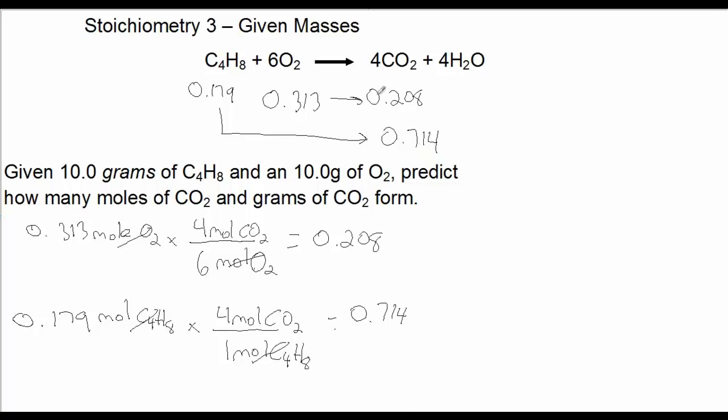So, in this case, the more realistic number is going to be the 0.208 moles of CO2. Even though, check it out, even though there's more moles of O2 rather than C4H8, again, it's that 6 to 1 ratio that makes this occur this way. So, our answer is going to be 0.208 moles of CO2. And if you convert 0.208 moles of CO2 to grams, you get 9.17 grams of CO2.